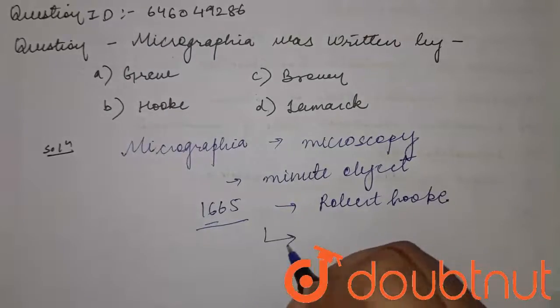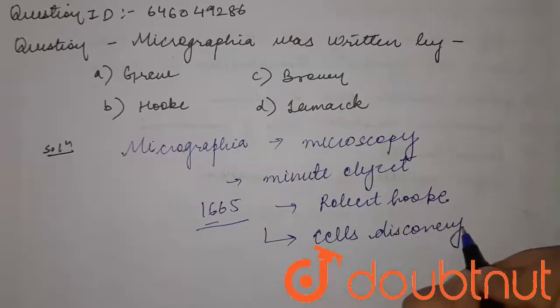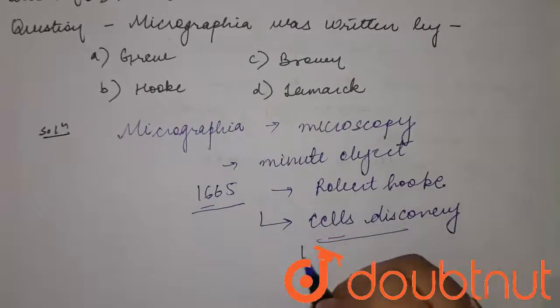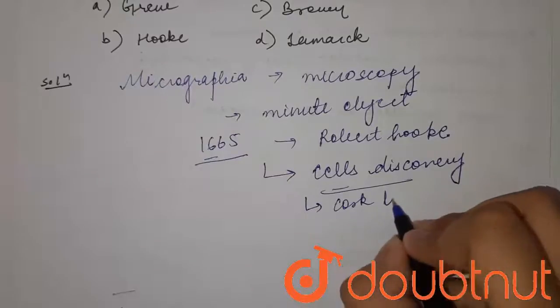In this, he showed the cell discovery - how he performed this discovery, or you can say how he found out this discovery in the cork tissue.